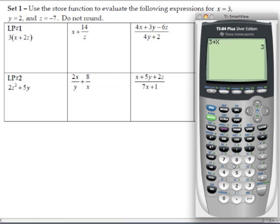For y, hit 2, store, then alpha 1 for the y button, and enter. 2 has been stored into y. For z, hit negative 7, store, alpha 2 to get z, and enter. Negative 7 has been stored into z.